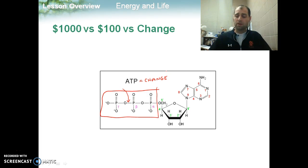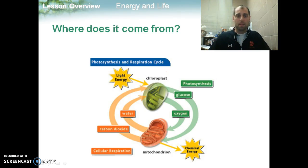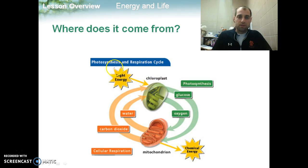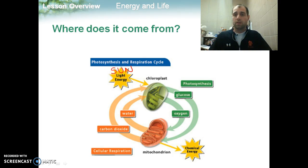So ATP is that perfect energy molecule. And as I said, ultimately where we're getting that energy is from the sun. The sun shines down onto plants, our primary producers, and our primary producers are going to have little organelles called chloroplasts.